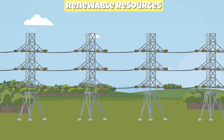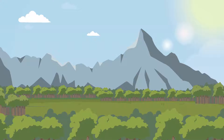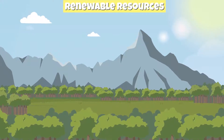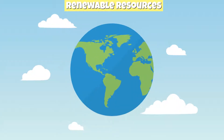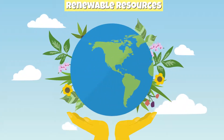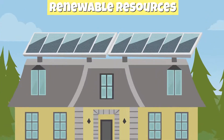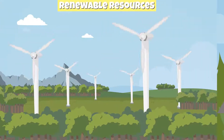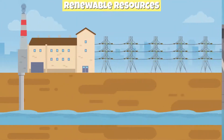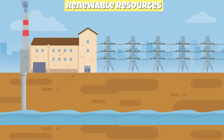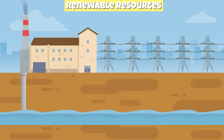Renewable resources can be turned into electrical energy. They produce low emission levels, less pollution, and have little impact on the environment. Solar panels, wind turbines, hydropower dams, and geothermal power plants are all ways of converting renewable resources to electrical energy.